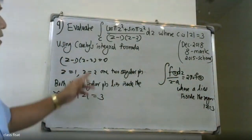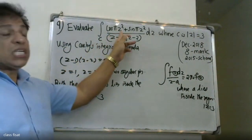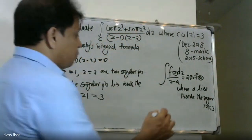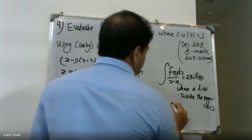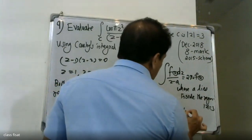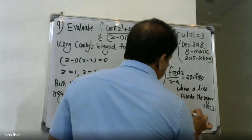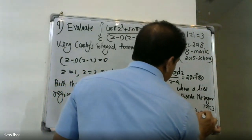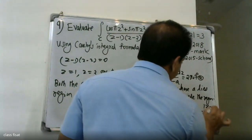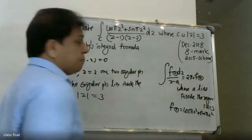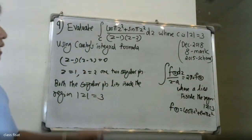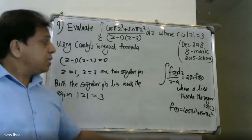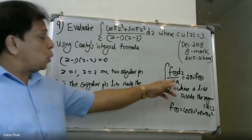We identify f(z) = cos πz² + sin πz², and the denominator is (z-1)(z-2). We now apply Cauchy's integral formula to this problem.